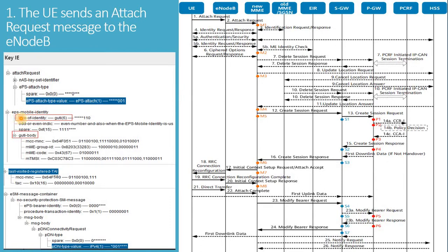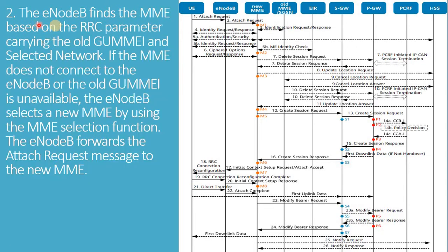The second key information element is EPS mobile identity, in which GUTI is a globally unique temporary identity that carries subscriber information such as the MCC and MNC. The E-NodeB finds the MME based on the RRC parameter carrying the old GU-MMEI and selected network. If the MME does not connect to the E-NodeB or the old GU-MMEI is unavailable, the E-NodeB selects a new MME by using the MME selection function and forwards the attach request message to the new MME.